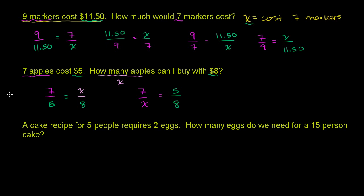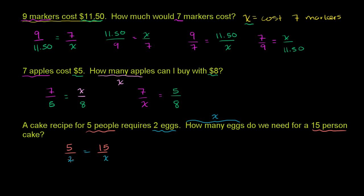Now let's do this last one. We have a cake recipe for five people that requires two eggs. We want to know how many eggs — we'll call that x. You could call it y, z, or any variable. How many eggs do we need for a 15-person cake? You could say the ratio of people to eggs is constant: five over two is equal to 15 over x. This ratio is going to be constant — five over two is equal to 15 over x.